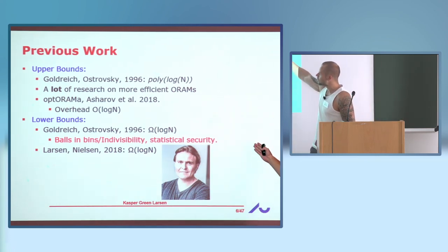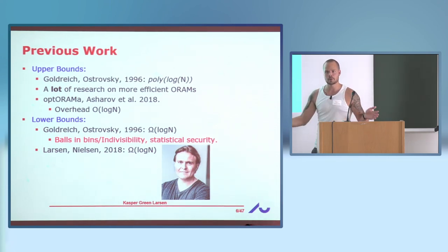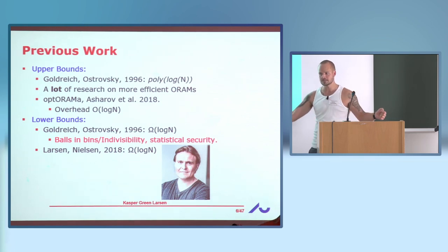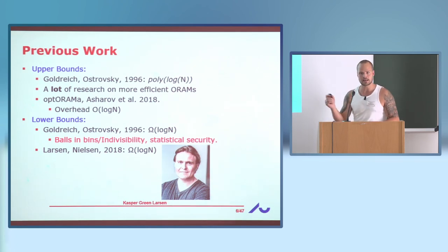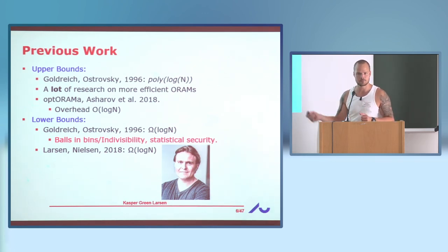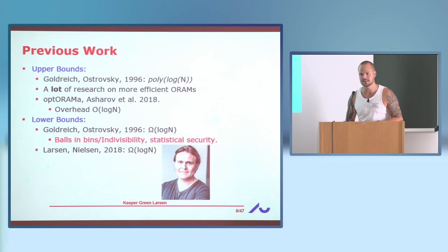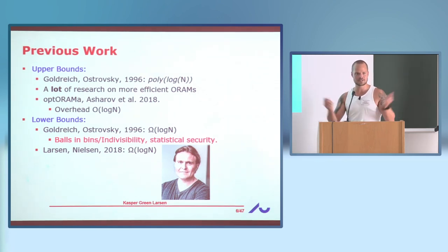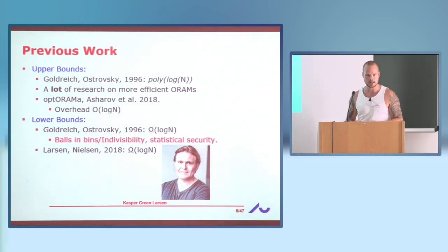One downside compared to that lower bound is that ours only holds in an online setting where reads and writes arrive online and you need to decide in an online fashion what to do — whereas the earlier bound holds even if you know the entire sequence of operations in advance. But all the upper bounds are in this online setting, and that's natural because the data is too large to store locally at the client, so it doesn't make sense to know the whole sequence in advance before running your algorithm.